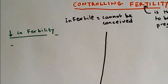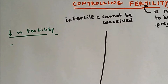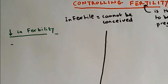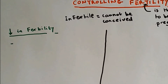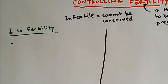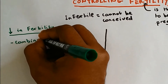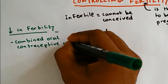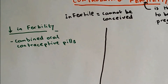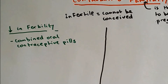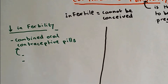On this side, I'm going to talk about how fertility is decreased using hormones. The pills taken to decrease fertility are called contraceptive pills. Since two hormones are taken in these pills, the pills are called combined oral contraceptive pills.